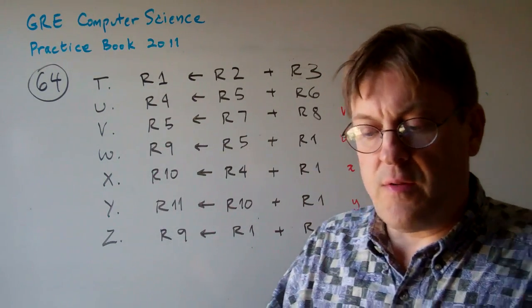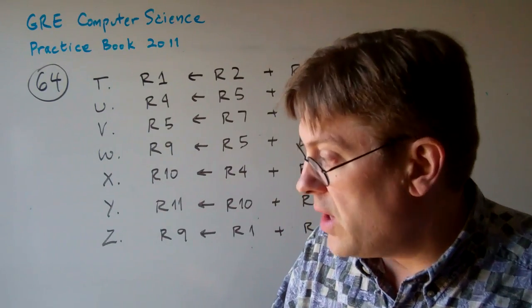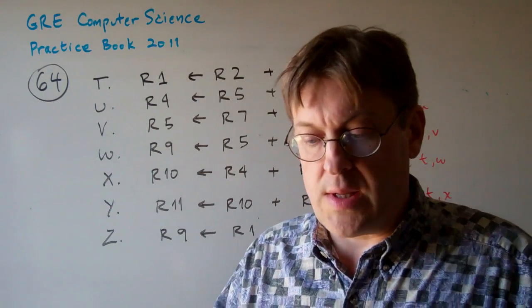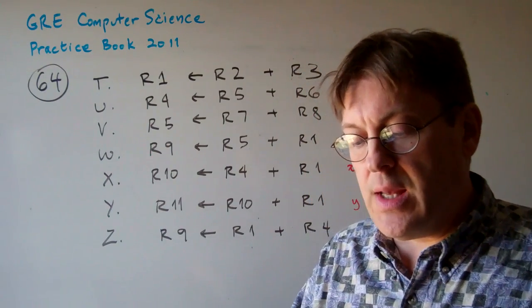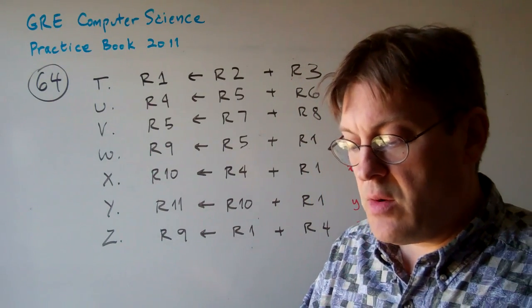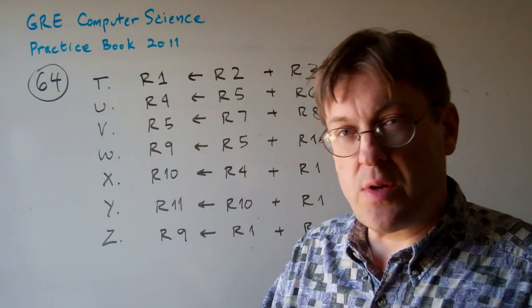Question 64. Consider the following instruction sequence for a hypothetical RISC processor. Which of the following is a possible legal execution order for the instructions of an out-of-order processor without register renaming?